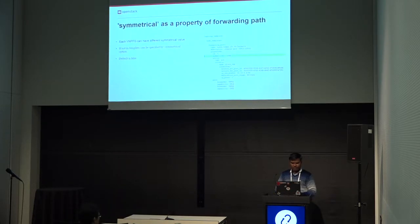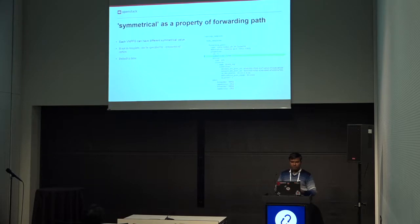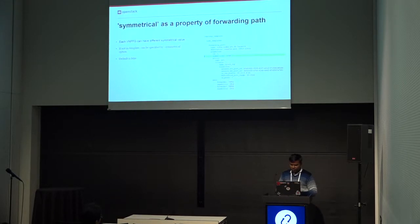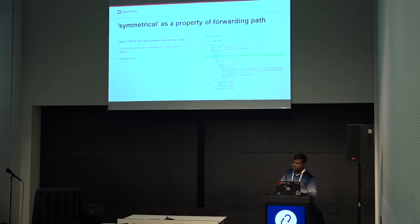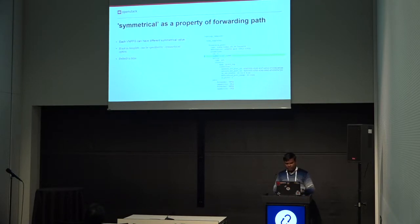The next one is symmetrical as a property of a forwarding path. A network service can have multiple VNF forwarding graphs, and each forwarding graph can have different symmetrical values. A user can set the symmetrical value to true or false to change the symmetrical value of the port chain in networking SFC. If the property is not set in the template, it can be specified using --symmetrical in the CLI when creating a VNFG. If it is not provided in either the template or the CLI, the default value will be false.